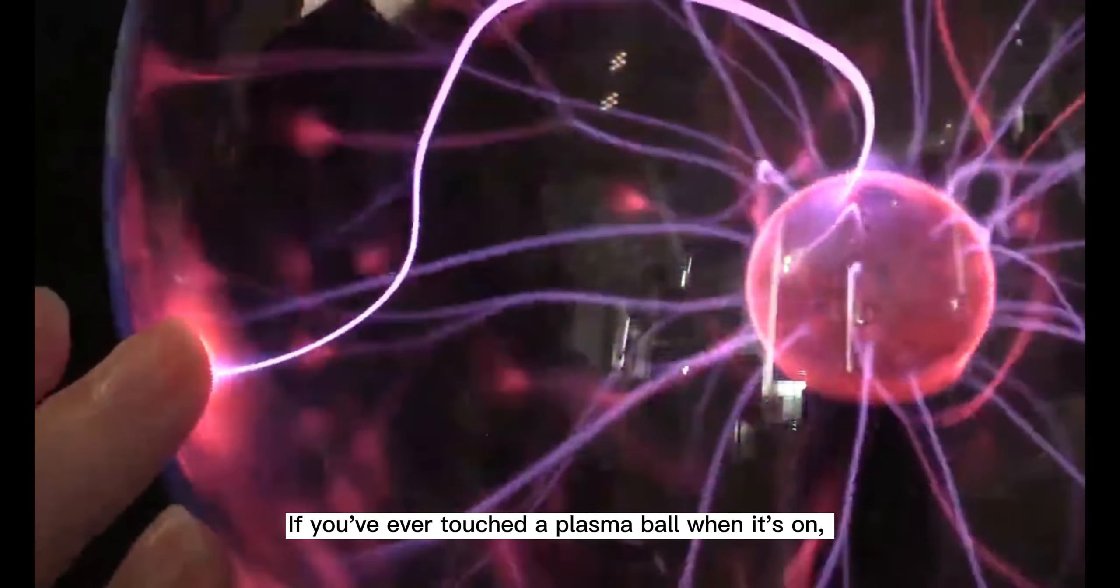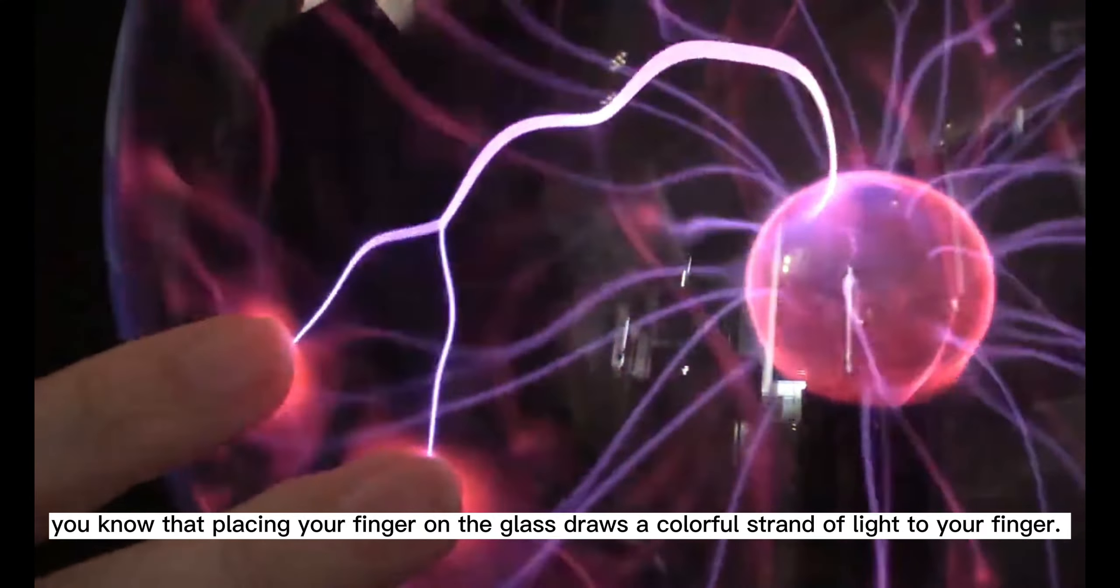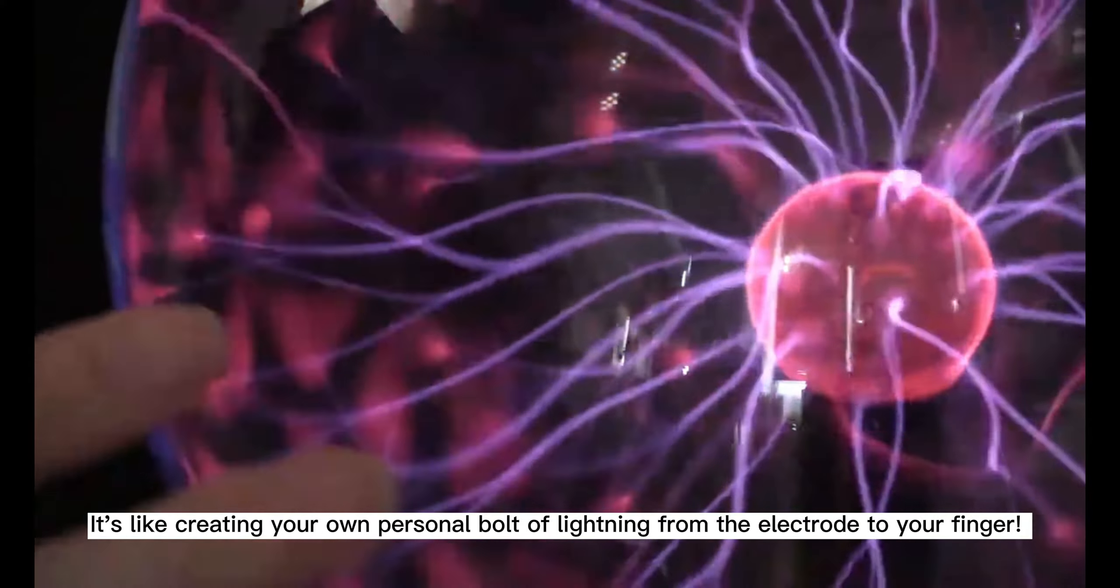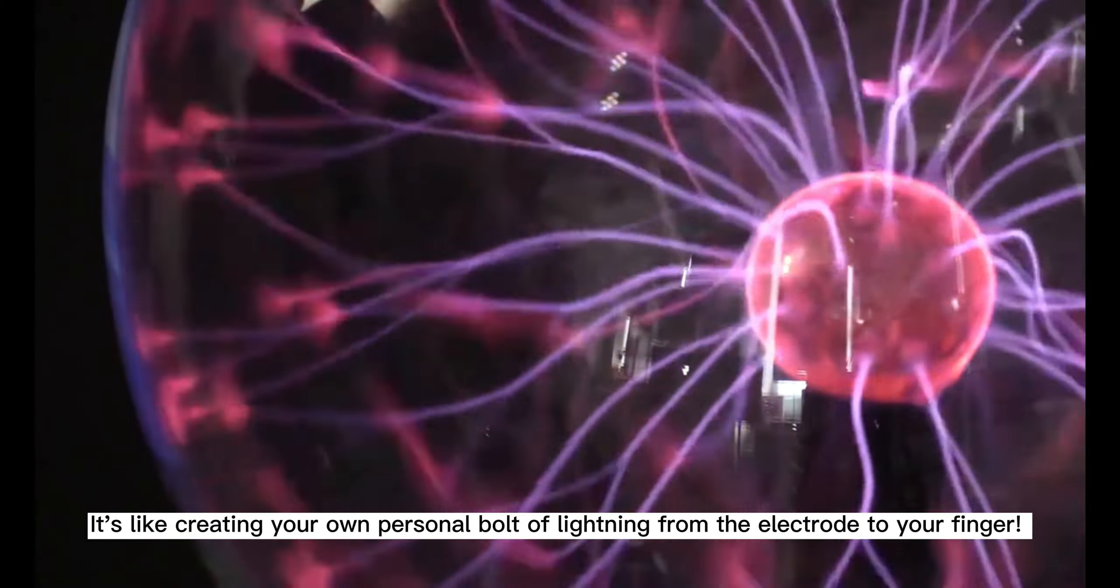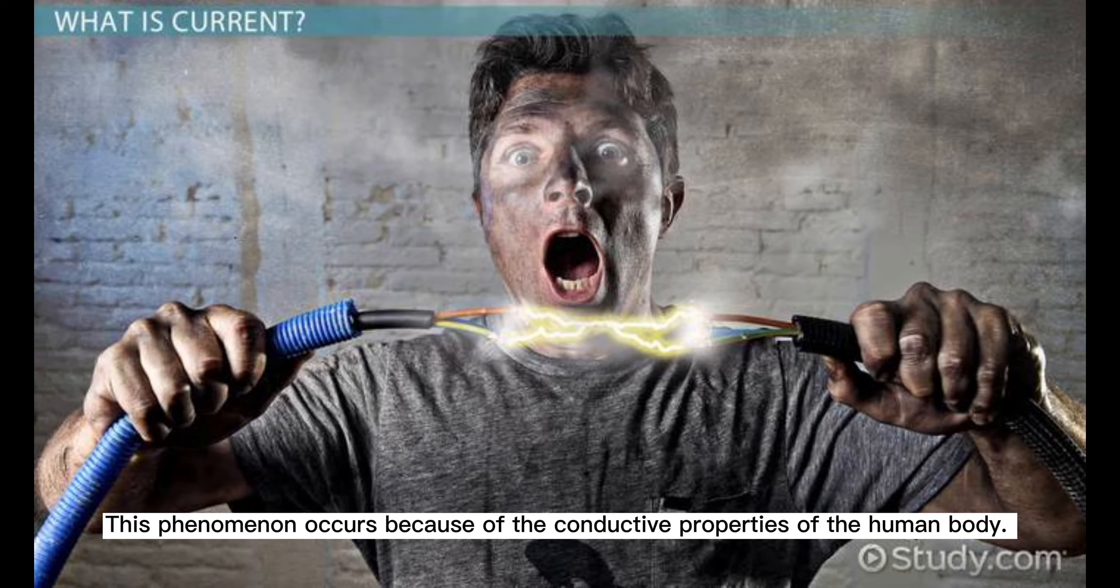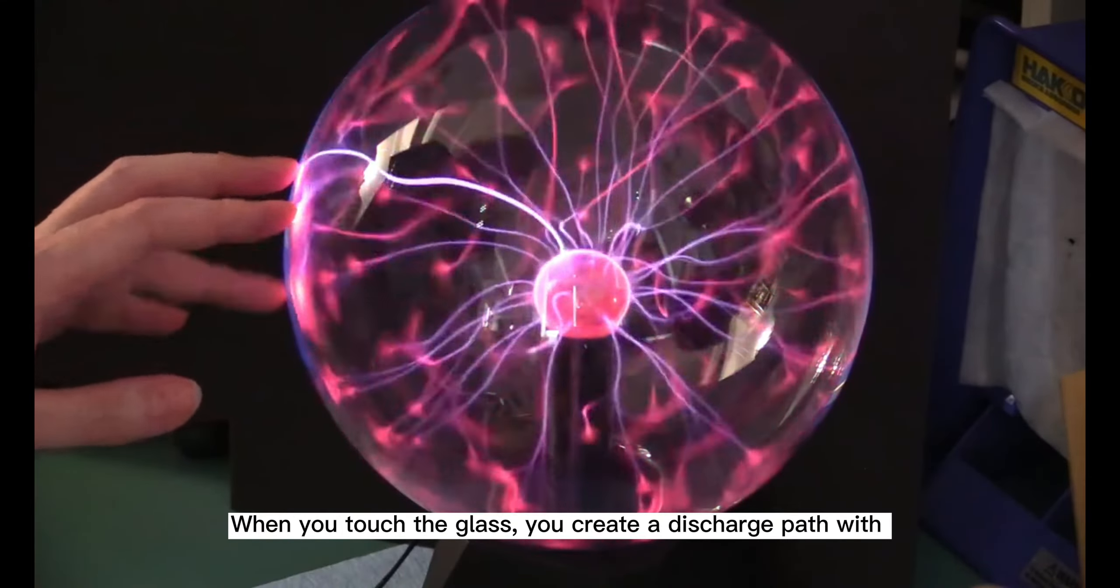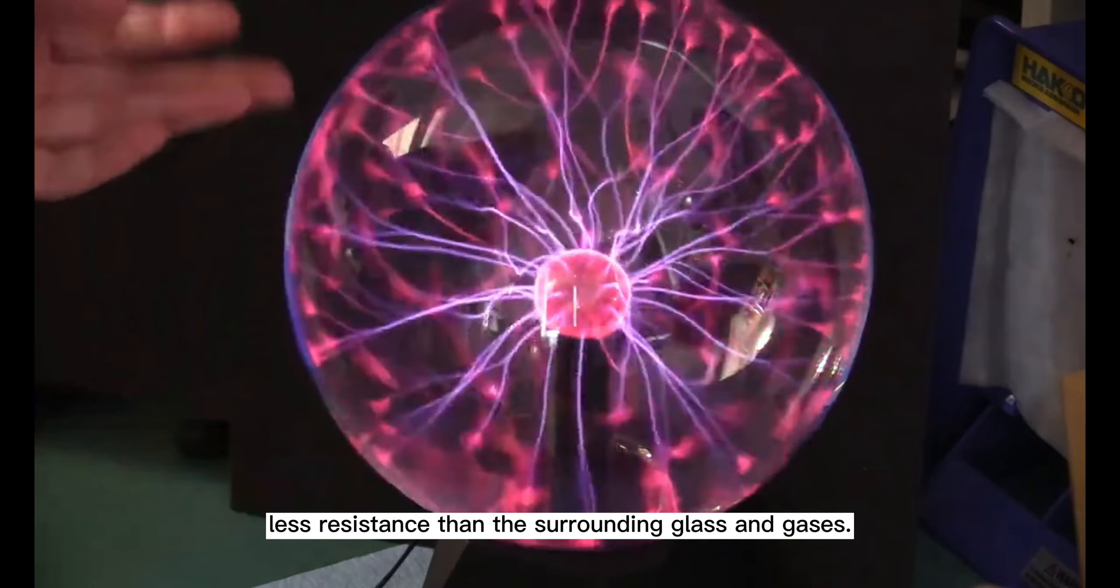If you ever touch a plasma ball when it's on, you know that placing your finger on the glass draws a colorful stream of light to your finger. It is like creating your own personal bolt of lightning from the electrode to your finger. This phenomenon occurs because of the conductive properties of the human body. When you touch the glass, you create a discharge path with less resistance than through the glass and gases.